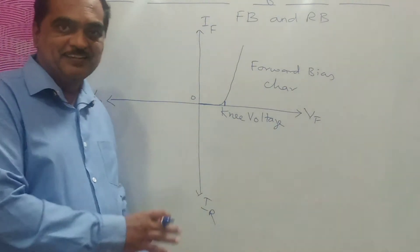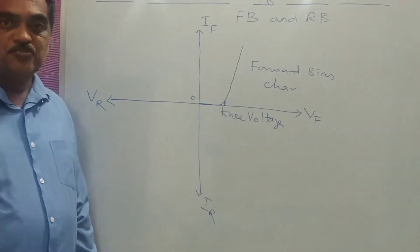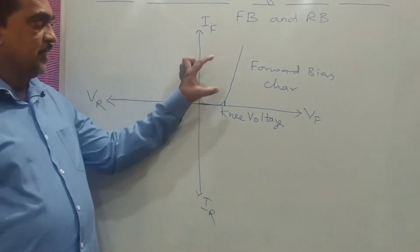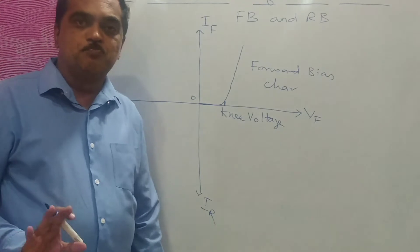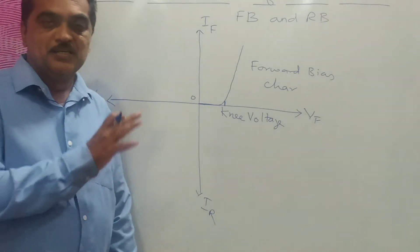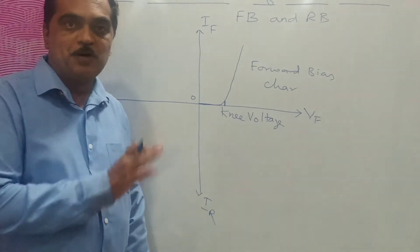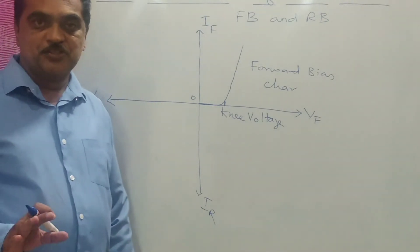The same type of characteristics you can see for Zener diode in the forward bias, and it is not much used in this forward bias type in any application.